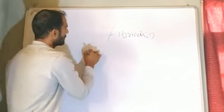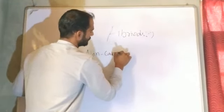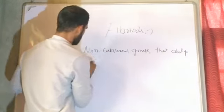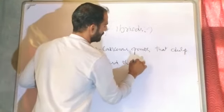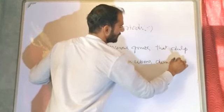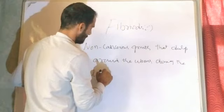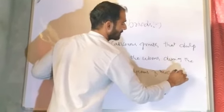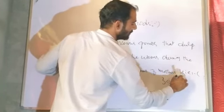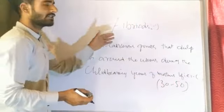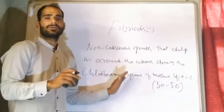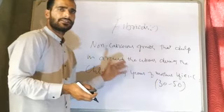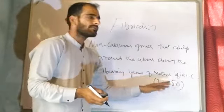What are fibroids? Fibroids are non-cancerous growths that develop in and around the uterus during the child-bearing years of a mother's life. That is between 30 to 50, which is most common. Child-bearing years are from 20 up to 50, but during 30 to 50, fibroids are most commonly seen.